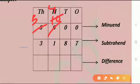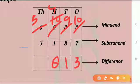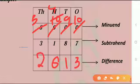Now subtract the regrouped number. That is ten ones minus seven ones is equal to three ones. Nine tens minus eight tens is equal to one ten. Nine hundreds minus one hundred is equal to eight hundreds. And five thousands minus three thousands is equal to two thousands.